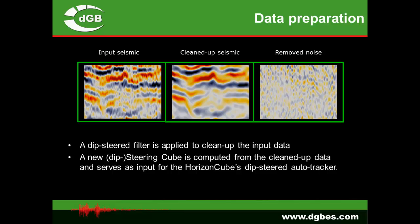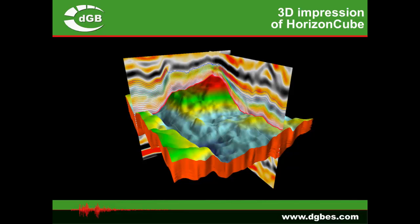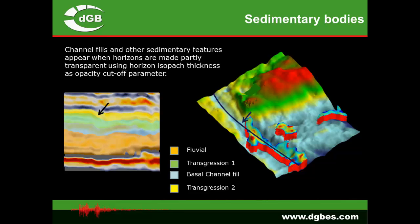The left section shows the very noisy seismic input data. We first applied dip-steered filters to clean up the seismic, then used the cleaned seismic to compute a new dip field, which was then used by the auto-tracker to produce the HorizonCube — all the colorful lines here are tracking the dip field. We then selected a top and base horizon from the HorizonCube, automatically calculated the isopach thickness, and removed everything falling below a certain threshold. This allows us to see inside the reservoir unit and visualize channelized bodies — exactly the positions where we want to place our wells. Geo-steering should follow the well trajectory along the channel.